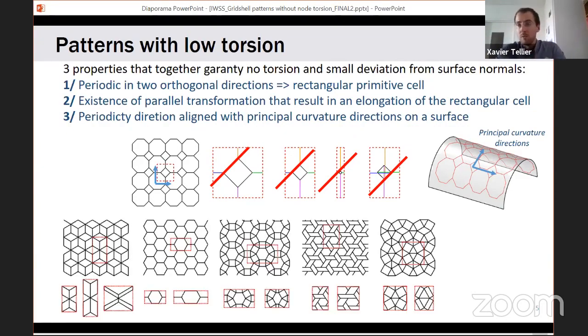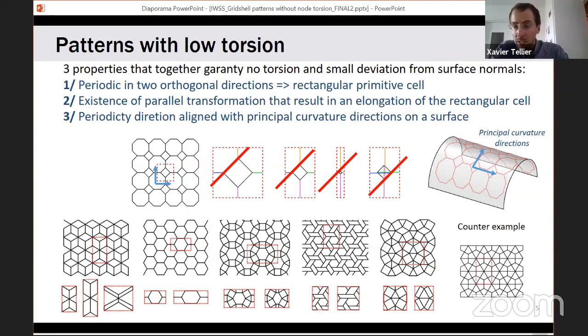There's a lot of patterns that actually fulfill these first two sets of rules. You can see five of them here. There are many more. You can see at the bottom how the primitive rectangular cell can be deformed by using these parallel transformations. And finally a counter example here. This one, the primitive cell is rectangular, but in the future the only parallel transformations we'll find are homotheties that will scale things up laterally at the same time. So this one does not fulfill the rule.